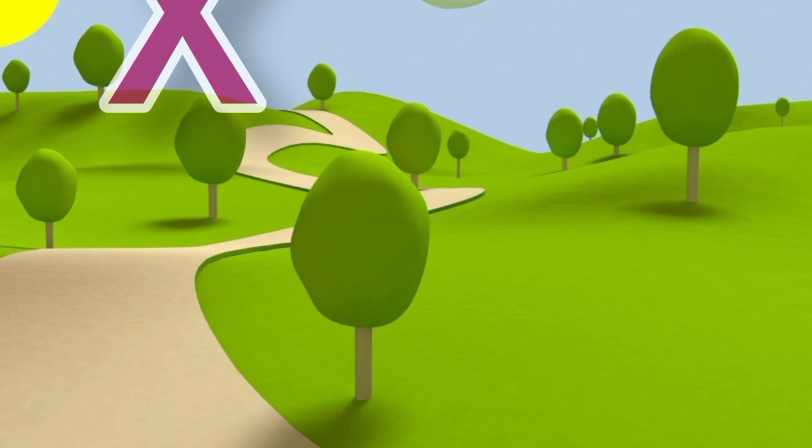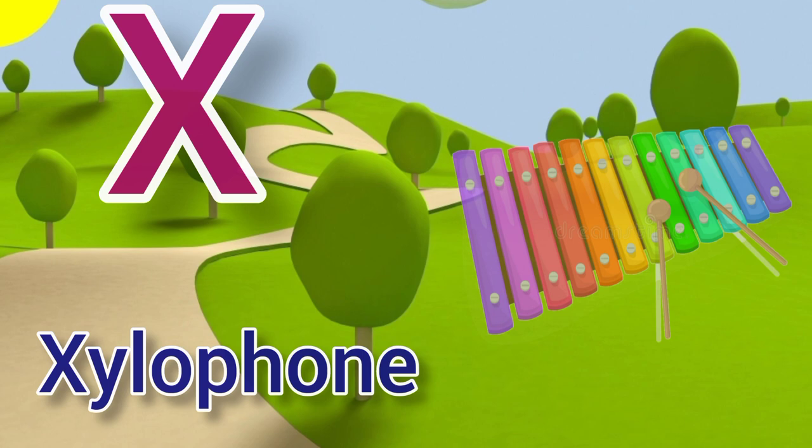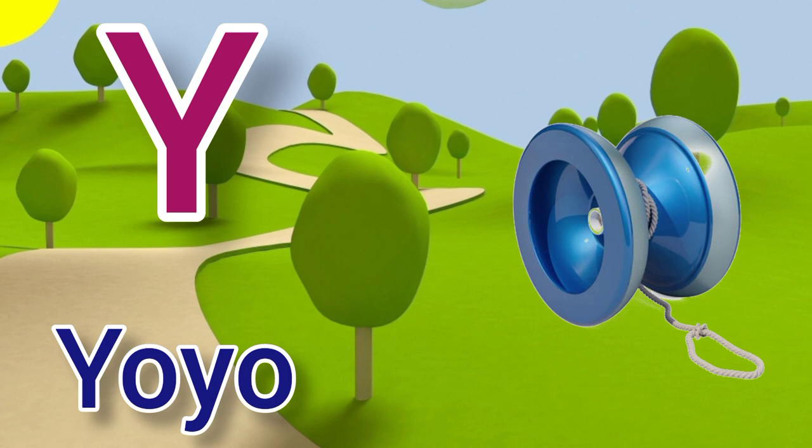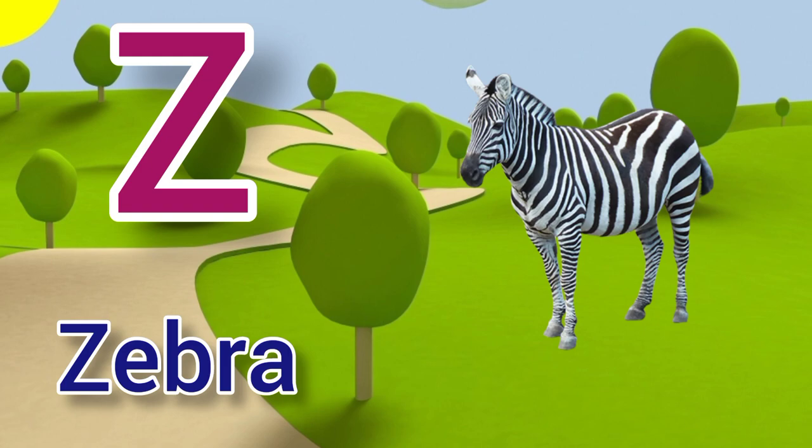X for xylophone, xylophone means xylophone. Y for yoyo, yoyo means yoyo. Z for zebra, zebra means chithidhar ghoda.